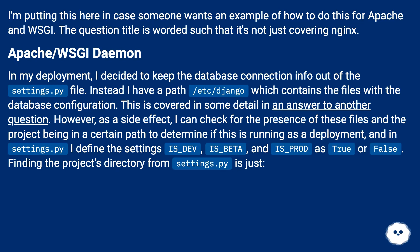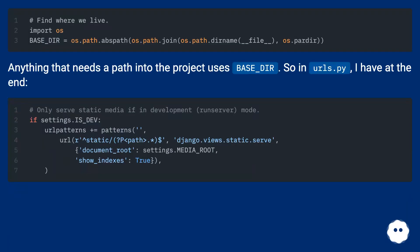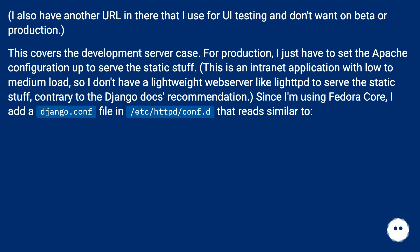Finding the project's directory from settings.py is straightforward using base_dir. Anything that needs a path into the project uses base_dir. In urls.py I have at the end a URL pattern for static files. I also have another URL for UI testing that I don't want on beta or production. This covers the development server case. For production, I just have to set the Apache configuration up to serve the static content.